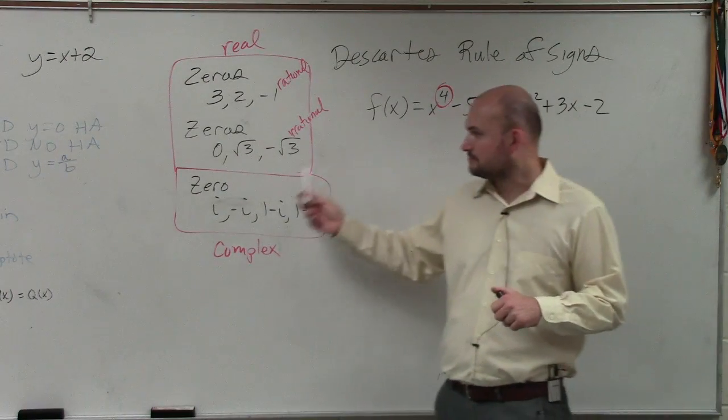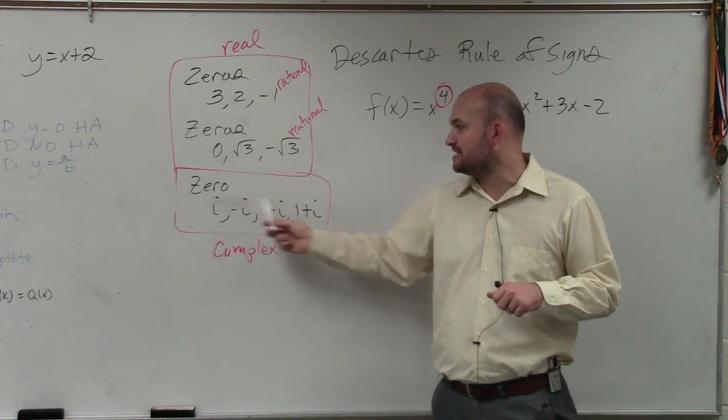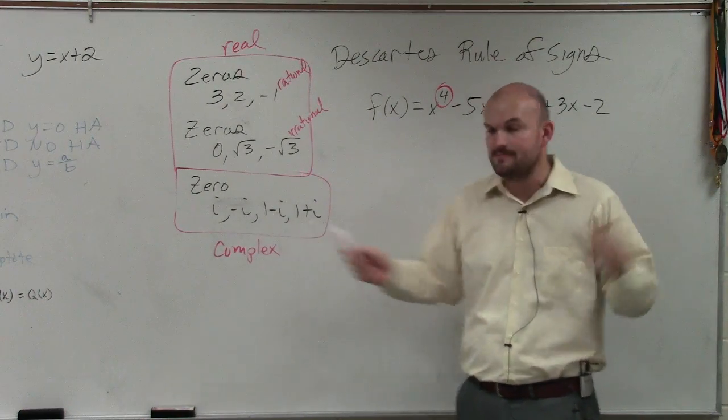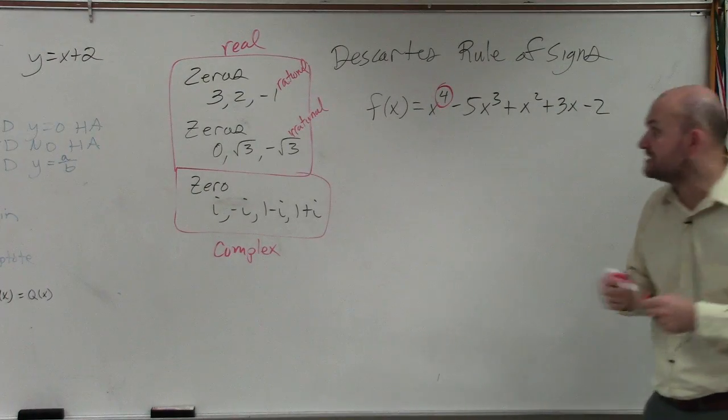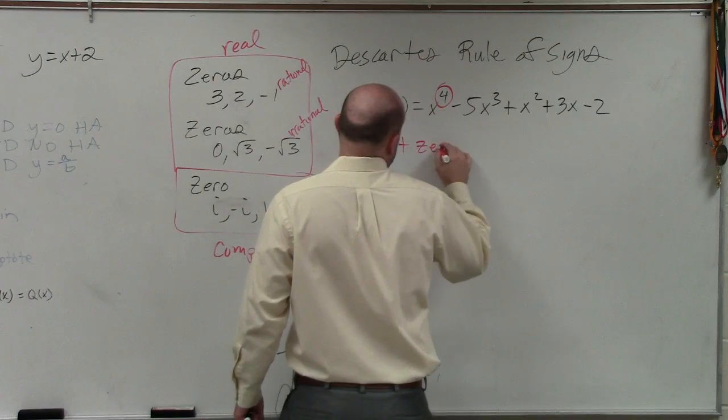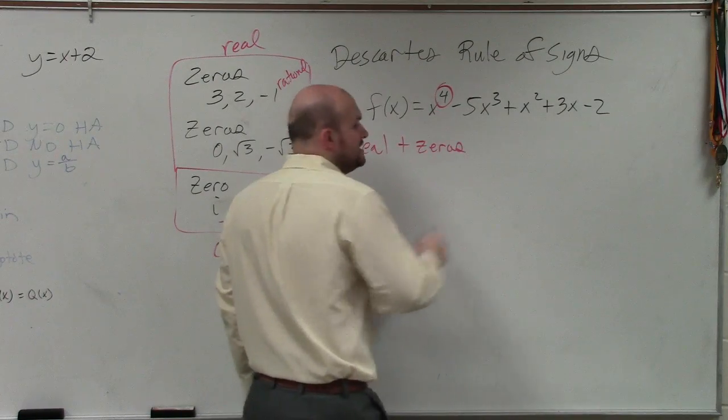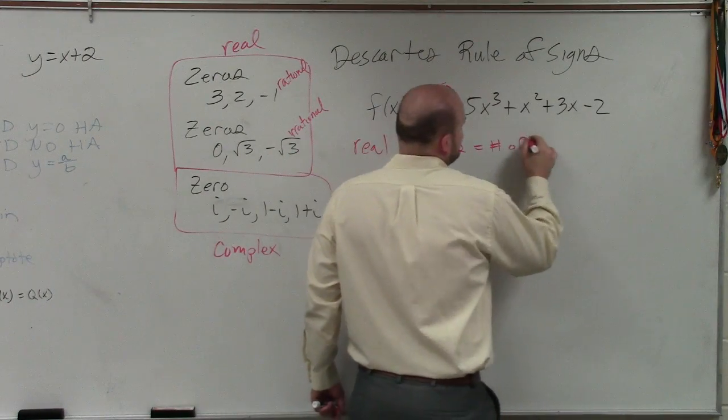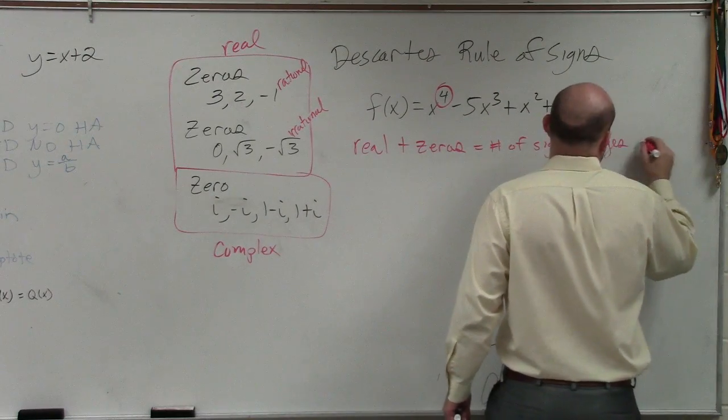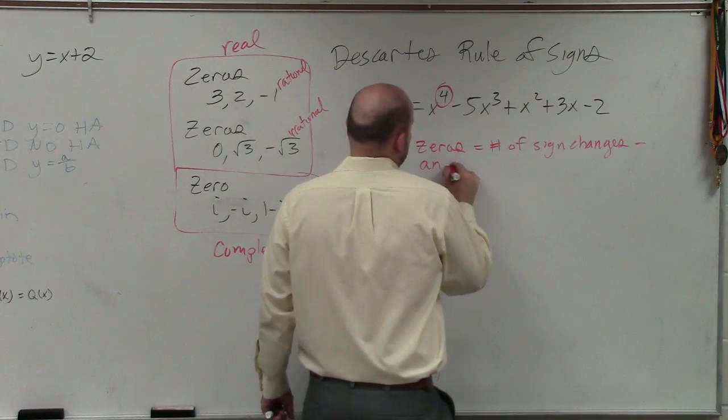Also, just to note, remember complex zeros always come in their conjugate, right? They always come in pairs. OK? So what Descartes' rule of signs says is I can determine the number of real positive zeros by the number of sign changes minus an even number.